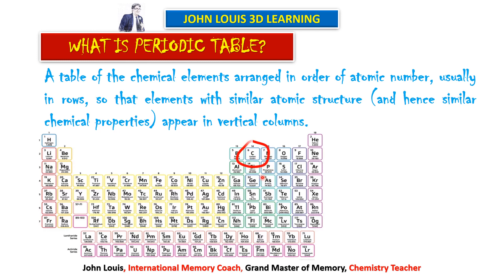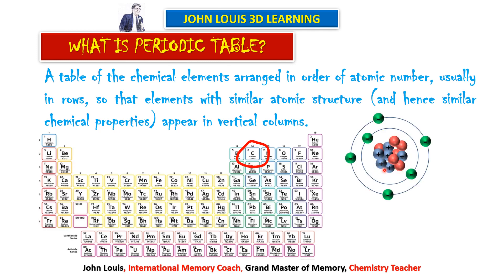Let's take one particular element — carbon. All elements are made up of atoms. The carbon atom consists of a nucleus, the central portion, in which protons and neutrons are present. Protons are positively charged, neutrons are neutral, and surrounding that nucleus, electrons will be revolving around the nucleus at various levels.